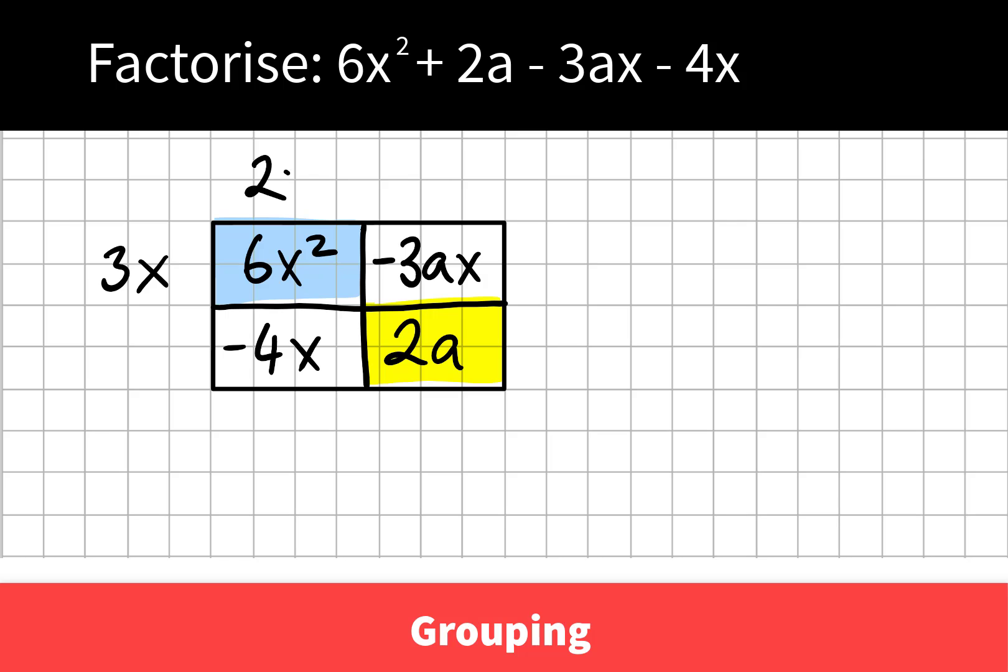So 3x multiplied by 2x gives us 6x squared, and 3x multiplied by negative a gives us negative 3ax.